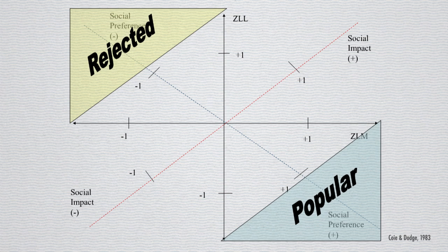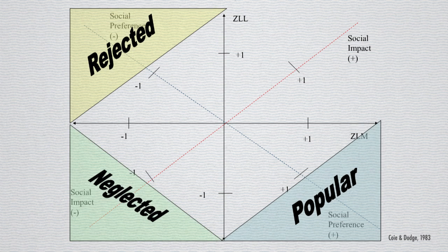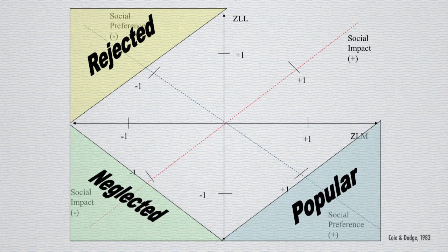It turns out though there are three other groups that we need to pay attention to that you might not have thought were as obvious. One of those groups are the kids that are not picked for like the most and they're not picked for like the least. And what researchers have found, and much of this was done first by John Coie and Ken Dodge, is that that group of kids can be referred to as neglected.